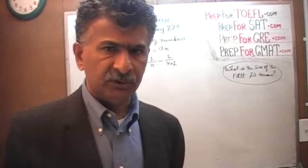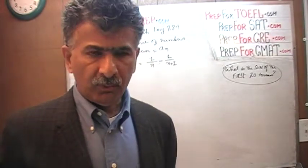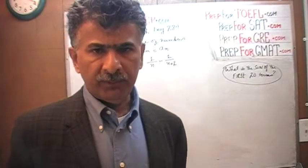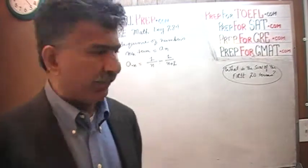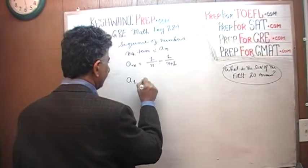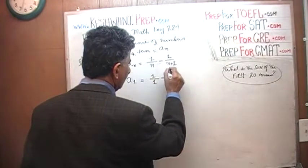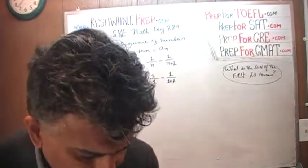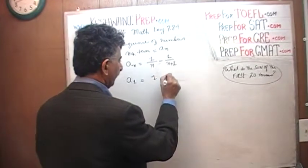We'll start with the first term, second term, third term, and so on — something will emerge. Sometimes it takes two or three terms, sometimes four or five. The first term, where n=1, is 1/1 minus 1/(1+2), which is simply 1 minus 1/3.